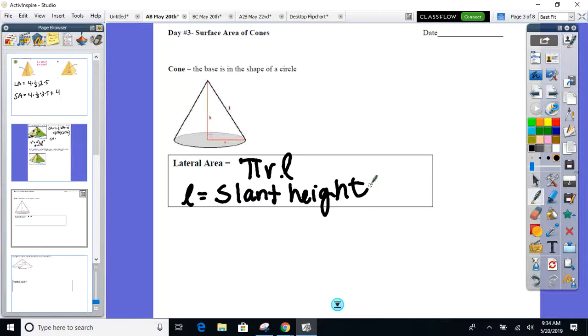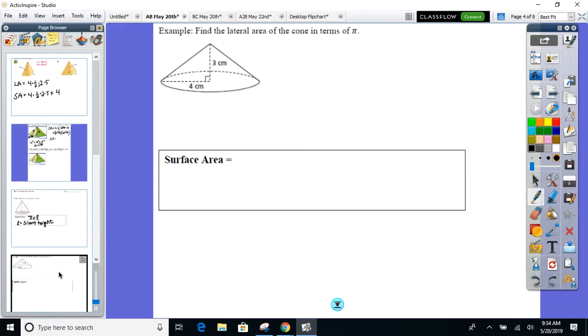We all good? Pi R L. That's one I don't give you. All right, go ahead. Find it in terms of pi. Here we go, find it in terms of pi. Lateral area of this cone. Terms of pi.